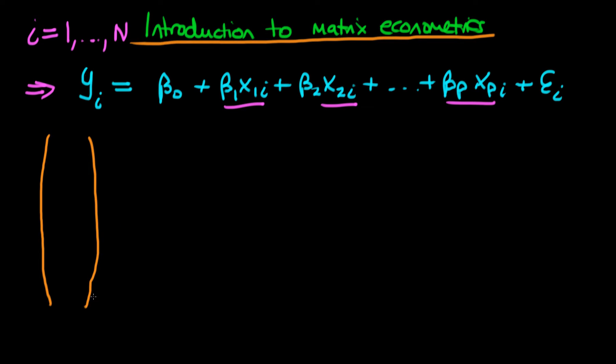In the matrix formulation, we stack each observation on top of one another. So our top observation is y1, then y2, continuing down to the nth observation yn. We write this as equal to a matrix, or strictly a vector, times a parameter vector. This parameter vector has components β0, β1, β2, all the way through to βp.